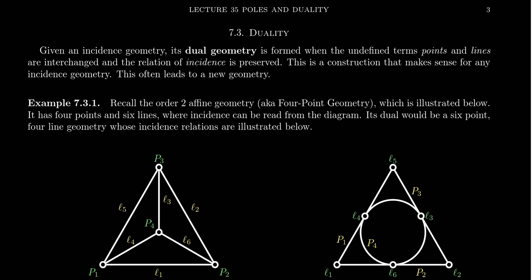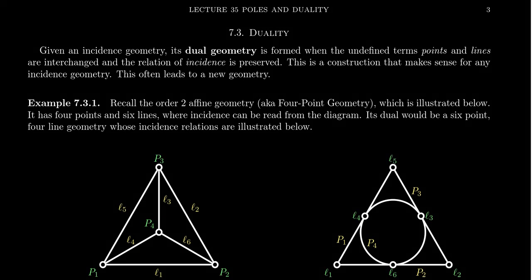We saw in the previous part of this lecture that in elliptic geometry, if we have a line, there exists a point called the pole for which all lines from the pole to the line are equidistant. And if you're given any point, you can construct a line for which the given point is a pole to that line. This idea of the pole and a line in elliptic geometry illustrates a concept we refer to as duality.